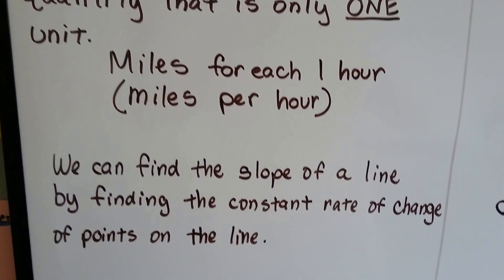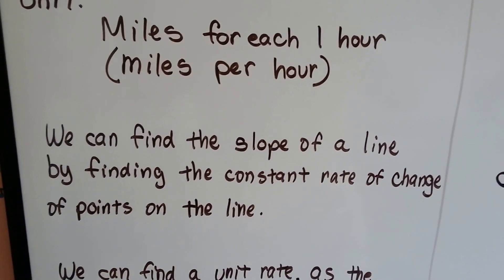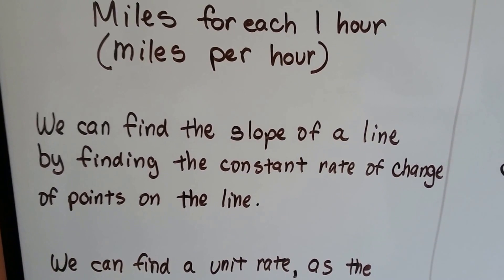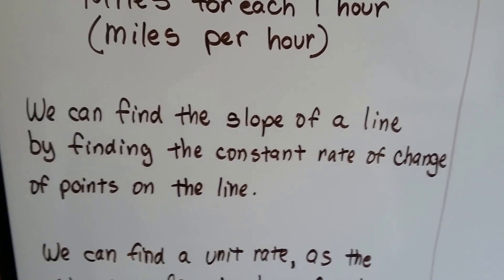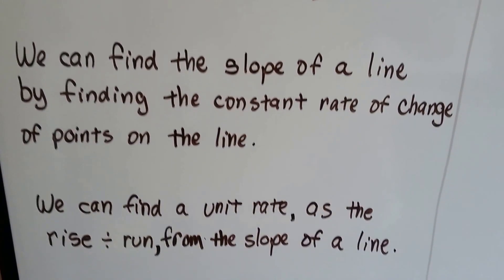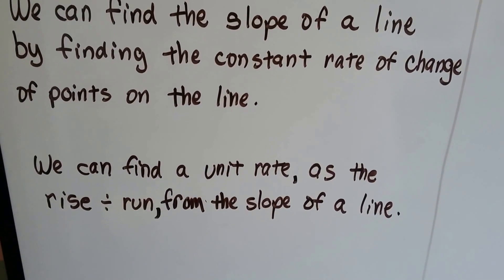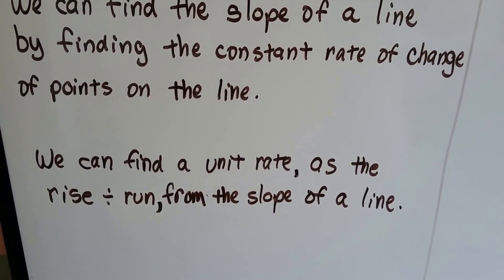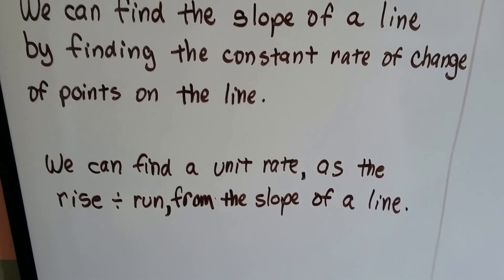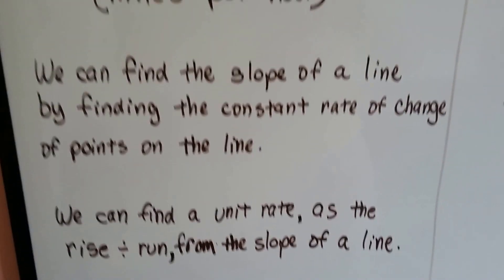We can find the slope of a line by finding the constant rate of change of points on the line. We can find a unit rate as the rise divided by the run from the slope of the line.